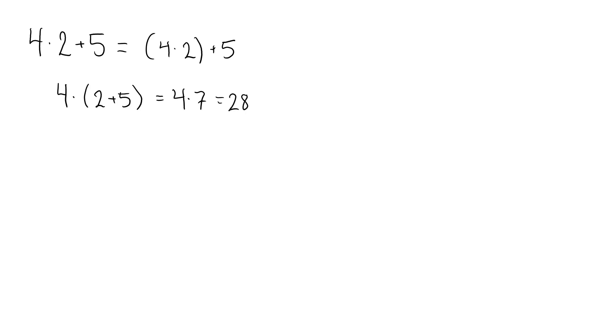The expression 4 times the sum of 2 and 5 can also be written as 4 times 2 plus 4 times 5, which is 8 plus 20, which is 28. The second expression is the distributive law.